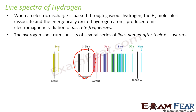All these spectra — Balmer, Lyman, Paschen — are named after the people who discovered them; they named them after themselves. The way it works is you take hydrogen gas and pass it through an electric discharge, and then the electrons get excited.